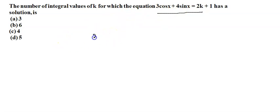Now we can rewrite this equation as 3 cos x plus 4 sin x equals 2k plus 1. So what we can do is divide both sides by the square root of 3 squared plus 4 squared.